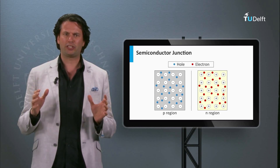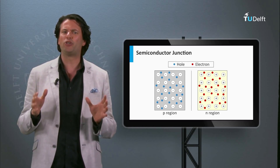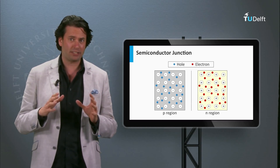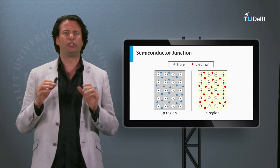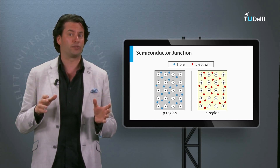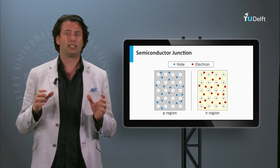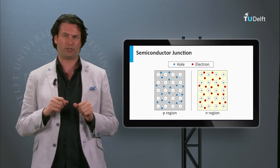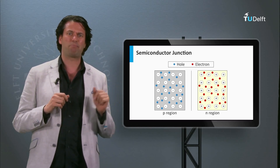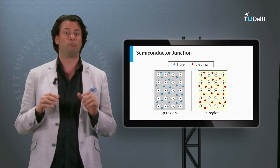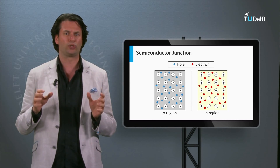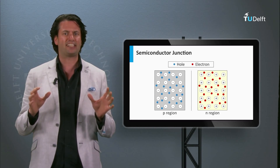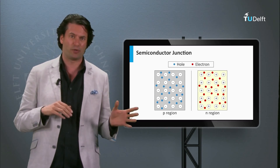We have introduced the fact that semiconductors can be doped, n-type and p-type. In the n-type material, the majority charge carriers are electrons, and the doping atoms that donated an electron are fixed positively charged in the network. In a p-type material, the majority charge carriers are holes, and the doping atoms that accepted an electron are fixed negative charges in the network.